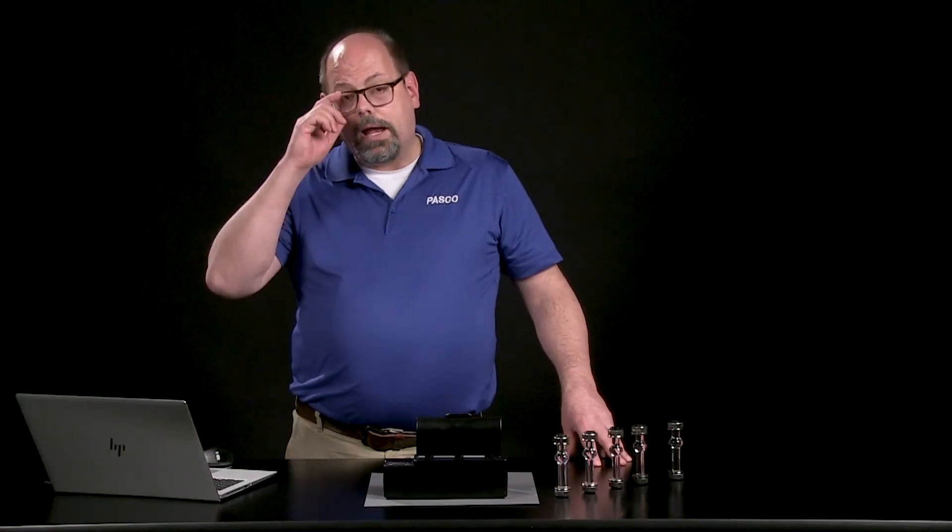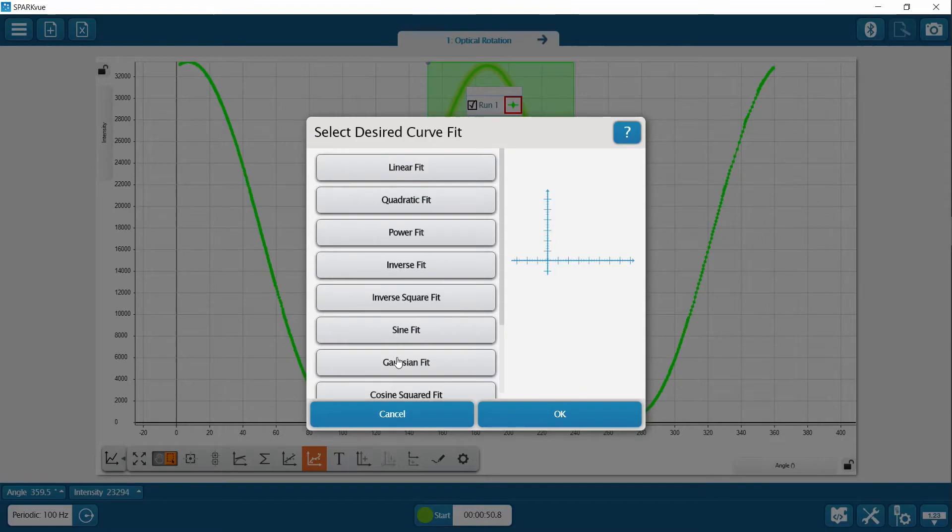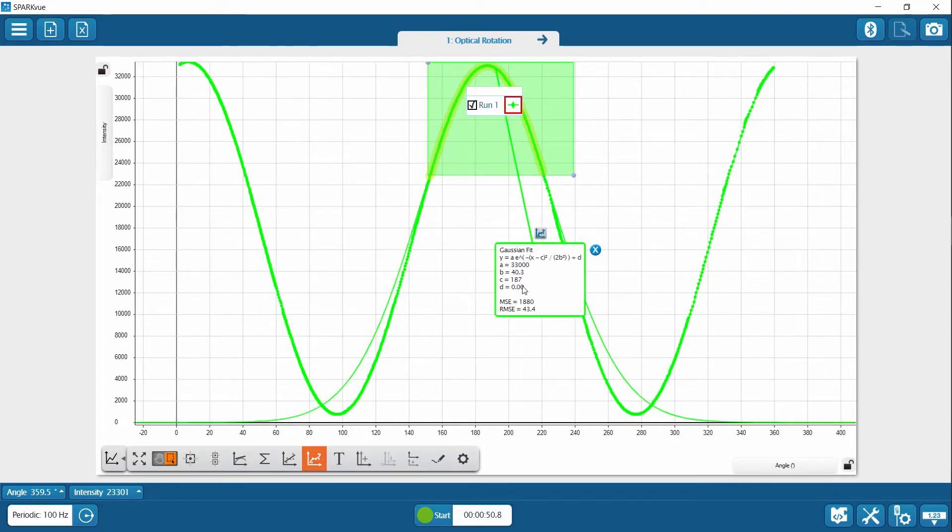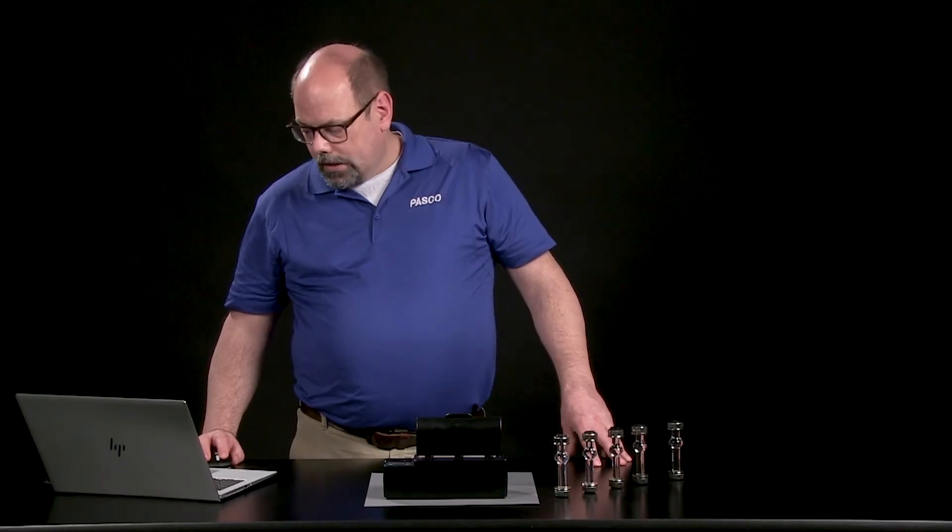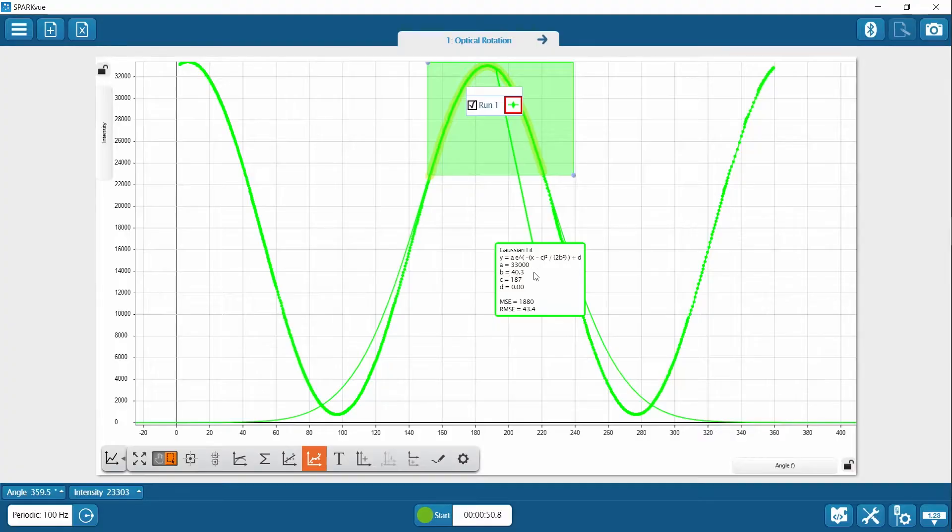You'll recognize Gaussian as the bell curve, a standard distribution. What's cool about the formula that comes up, the letter C, the term C is the center of that distribution, which is the peak of that wave. So you don't have to sit there and take the tedious detail to find that peak. We're going to use it as 187.